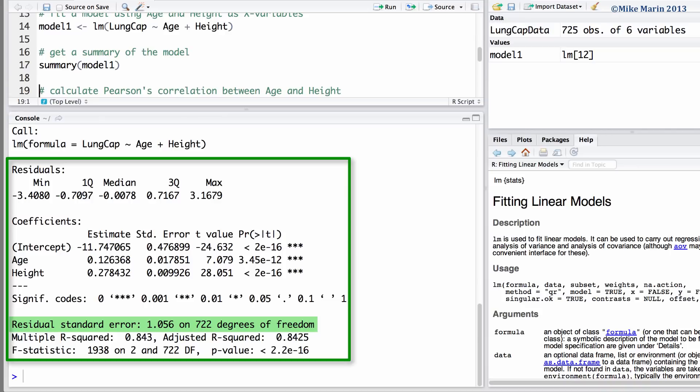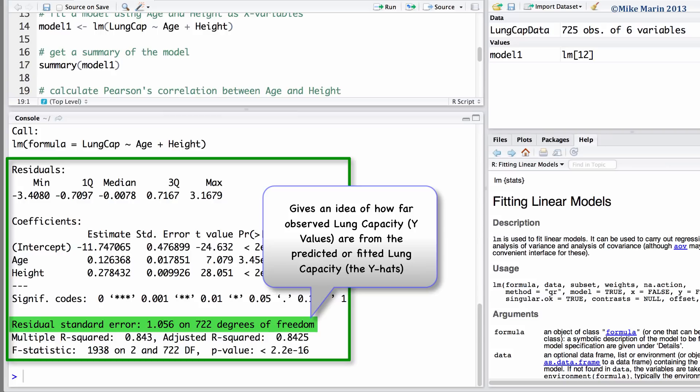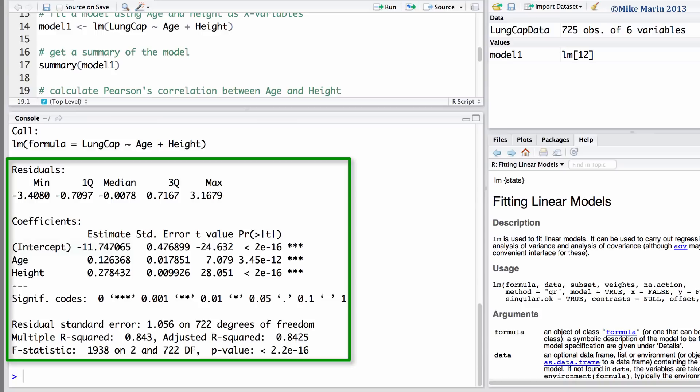Here, we can see the residual standard error. This gives us an idea of how far observed lung capacities, or y-values, are from the predicted or fitted lung capacity, the y-hats. This gives us an idea of the typical sized residual or error.